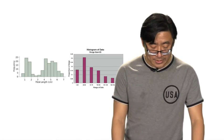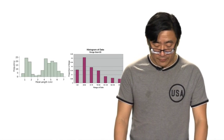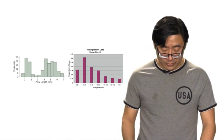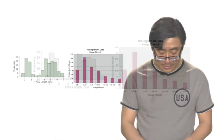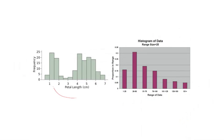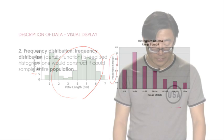Here are two examples of histograms. On the left-hand side is the histogram of the frequency, and on the right-hand side is the histogram in terms of proportion.